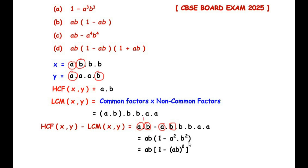This expression can also be written as ab times 1 minus (ab) squared, where instead of writing a squared b squared we combine the terms as ab raised to the power of 2, using the laws of indices. Now let us check if this matches any of the options — it does not match directly, so we need to use an algebraic identity to expand this bracket.